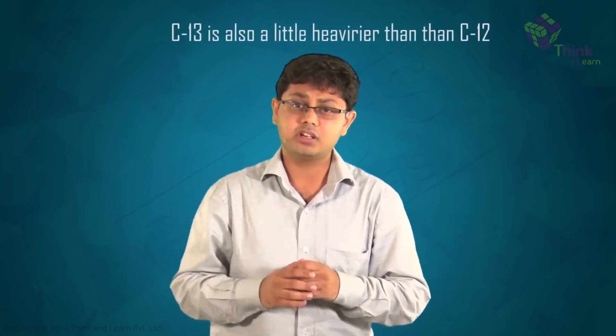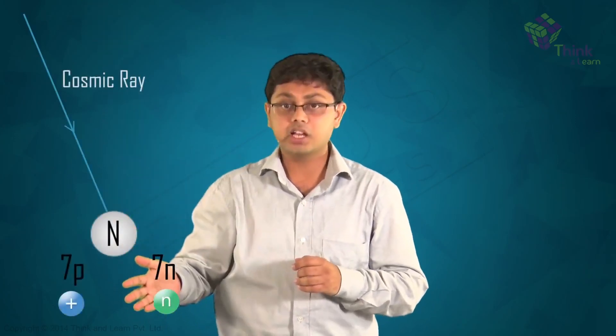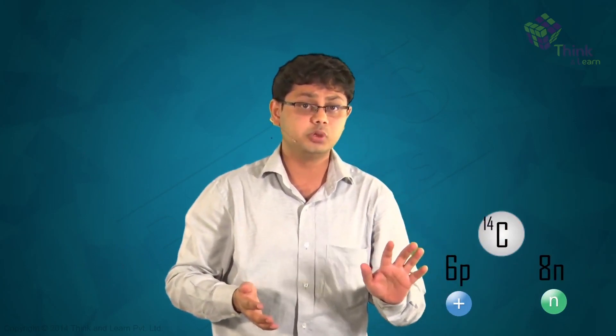Then there is one more rarer avatar of carbon, formed when cosmic rays strike nitrogen high up in the atmosphere. Why nitrogen? Because nitrogen has 7 protons and 7 neutrons, and the cosmic rays convert one of the protons into a neutron. So now it becomes 6 protons and 8 neutrons, which gives you carbon-14.